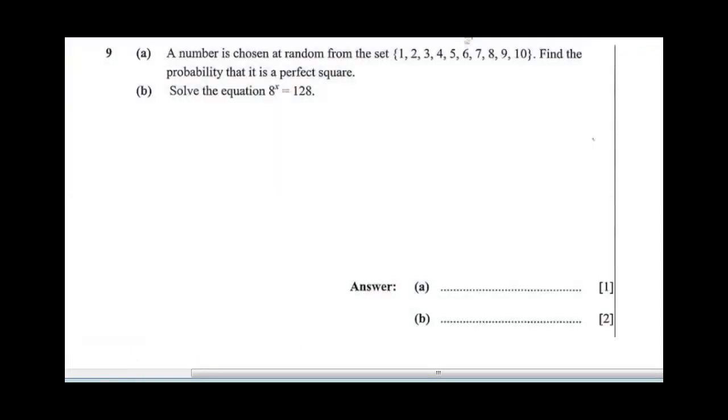Question 9 says a number is chosen at random from the set 1, 2, 3, 4, 5, 6, 7, 8, 9, 10. Find the probability that it is a perfect square. What are perfect squares? Perfect squares in this number are any number that has a square root: 4 and 9. Because 4 is 2 squared, 9 is 3 squared. So that means we have two outcomes. Probability of having a perfect square would be 2 over the total set of numbers, which is 10. So this would be 2 over 10, which is 1 over 5.